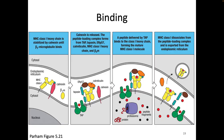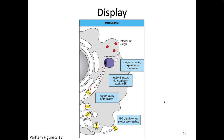Once MHC class 1 has peptide in the peptide binding groove, the chaperones go away and the MHC molecule just gets taken to the surface. This is in fact a constitutive process — an automatic process. Once we have this finished MHC molecule, we just put it straight up onto the surface. So it is a constitutive display. As soon as we get our peptides onto the MHC, we move that MHC right up to the surface of the cell to present.